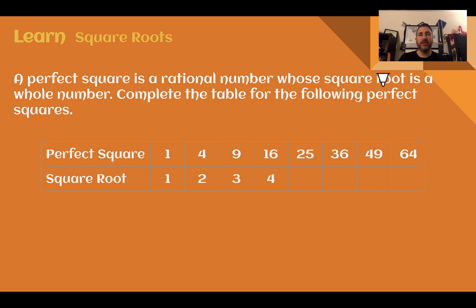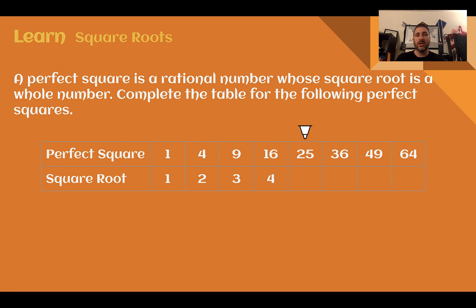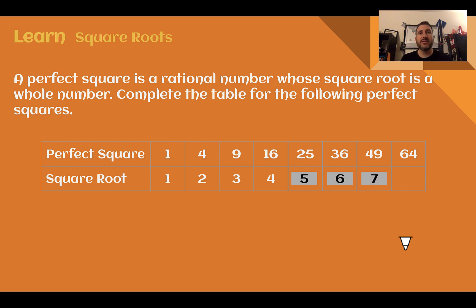Complete the table for the following perfect squares. The perfect square is 1, since 1 times 1 is 1. The perfect square is 4, since 2 times 2 is 4. The perfect square is 9, since 3 times 3 is 9. 16 is made by 4 times 4. If we have a perfect square of 25, the root would have to be 5, since 5 times 5 is 25. 36 — the square root of 36 would be 6. The square root of 49 would be 7, and the square root of 64 would be 8, since 8 times 8 is 64.